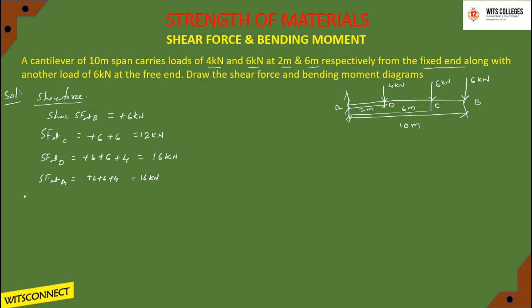Next, bending moment. Bending moment at B is always zero at the free end. Next, bending moment at C — the load sign is downward, so it is a hogging position, meaning it is negative sign. Bending moment at C: the load acting is 6 kilonewtons with a distance of 2 plus 2 equals 4 meters.